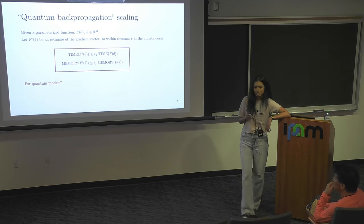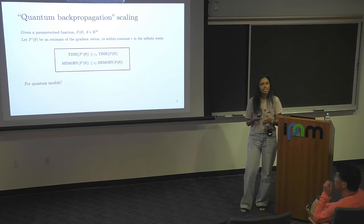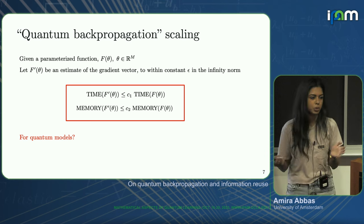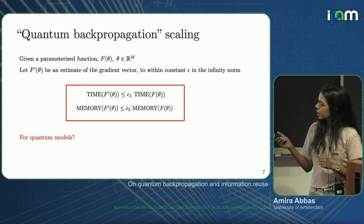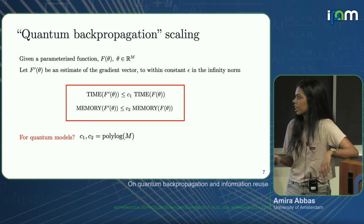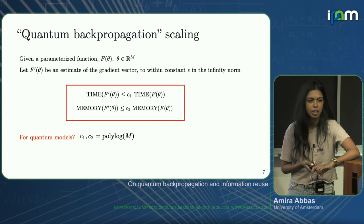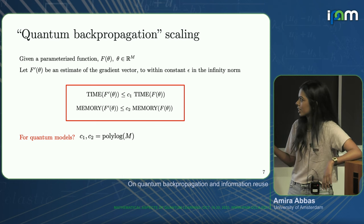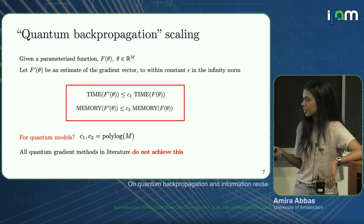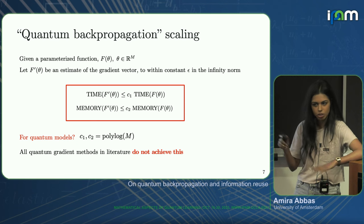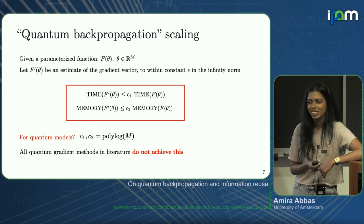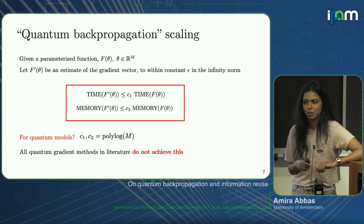This sets up the research question. Obviously the next natural thing we ask is: can we achieve this very nice relative scaling of resources for these parameterized quantum models? Maybe even if we relax the assumption that c1 and c2 have to be constants independent of parameters — maybe we allow some polylogarithmic dependence on the number of parameters. As far as I know, all gradient methods in the literature for computing gradients for these models do not achieve scaling where c1 and c2 are constant or polylogarithmic in the number of parameters — this is something that's kind of just politely ignored.